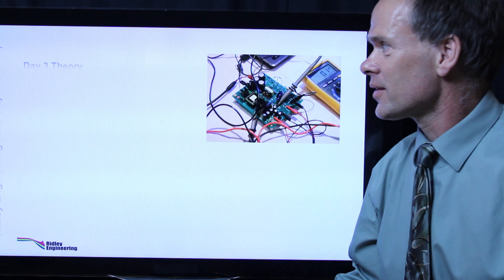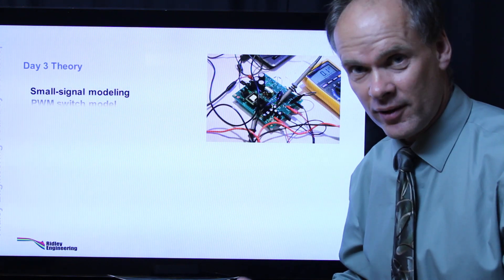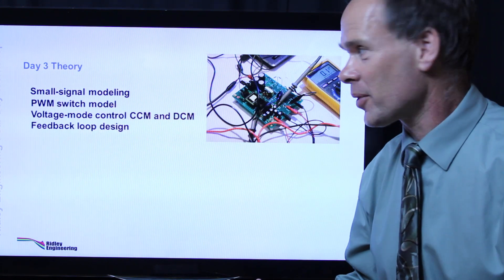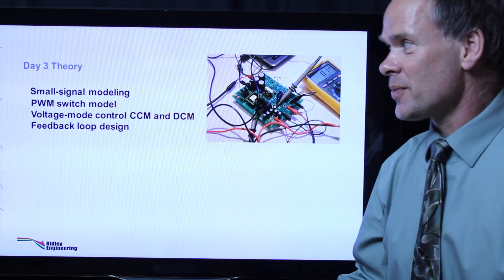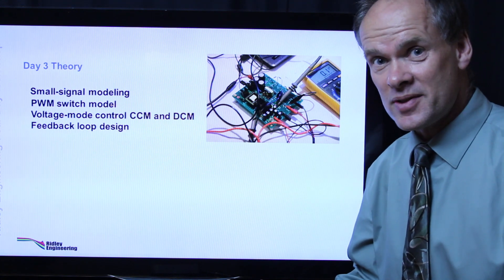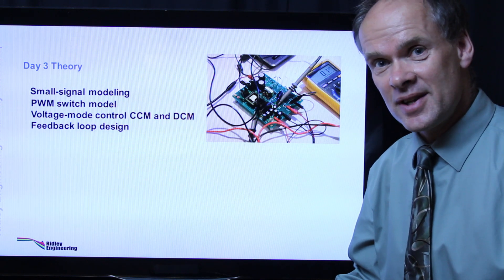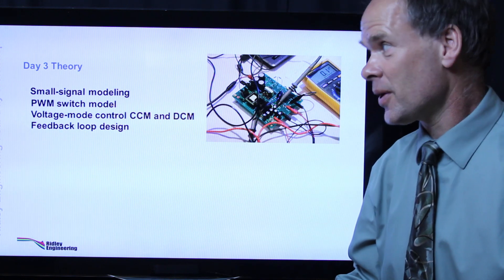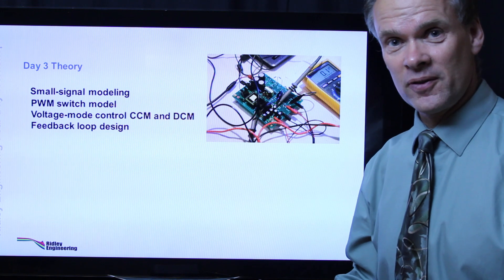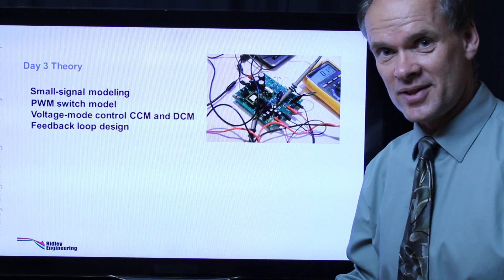On day three we move on to control. So now you've got your working power stage, you have to control it properly. We'll talk about small signal modeling, the PWM switch model, voltage mode control in both continuous and discontinuous conduction mode, and then moving on to feedback loop design to optimize the converter.